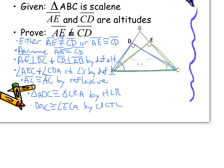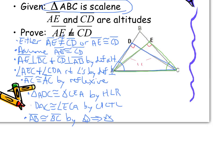And now, if I have those angles congruent, then by angles and sides I can prove that segments AB and BC are congruent. However, this contradicts my given that triangle ABC is scalene. So this means triangle ABC would not be scalene, which contradicts our given and makes our assumption false. Therefore, AE cannot be congruent to CD.